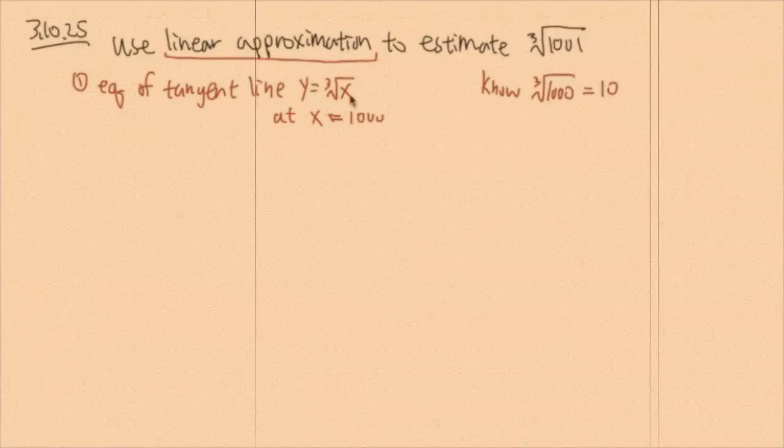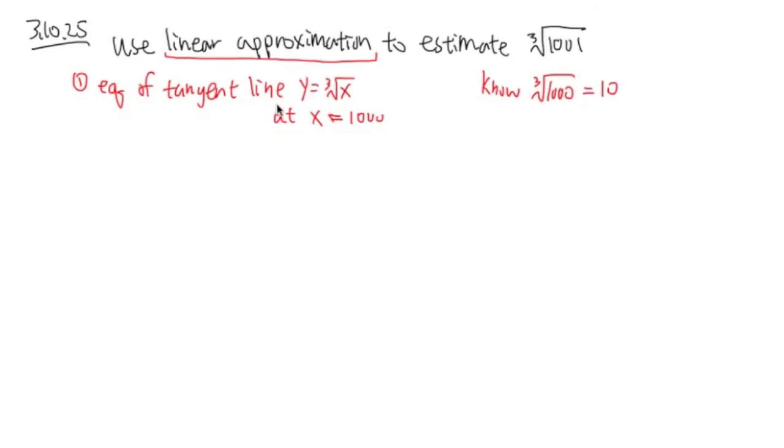And let's get this done first. To get the equation of a tangent line, of course, we need two things. Here we go. The slope, which is the derivative. Let's do this.